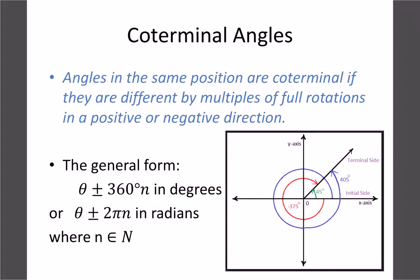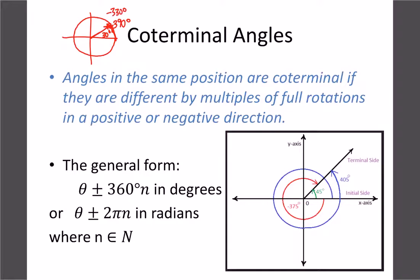Co-terminal angles are angles that repeat over and over — they land in the exact same location. For example, 30 degrees and 390 degrees are co-terminal because 390 = 360 + 30. Negative 330 degrees is also co-terminal with 30 degrees. Since they represent the same angle, sine, cosine, and tangent give identical values for all co-terminal angles. We find them by adding or subtracting multiples of 360.